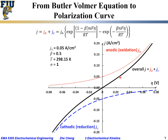The black curve represents the overall or net current density. The red dotted curve represents Jₐ, the anodic or oxidation current density, while the blue dashed curve represents the cathodic or reduction current density. The summation of the anodic and cathodic — the red and blue — gives us the net or overall current density.